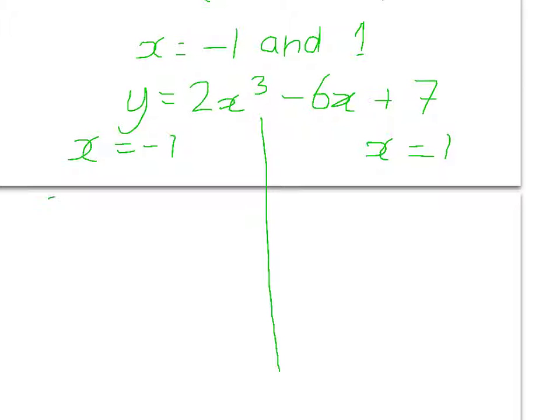So, we're going to substitute minus 1 in. So 2 times minus 1 cubed minus 6 times minus 1 plus 7. OK, so minus 1 cubed is minus 1 times minus 1 times minus 1, which is minus 1. And then times that by 2, so that's minus 2.